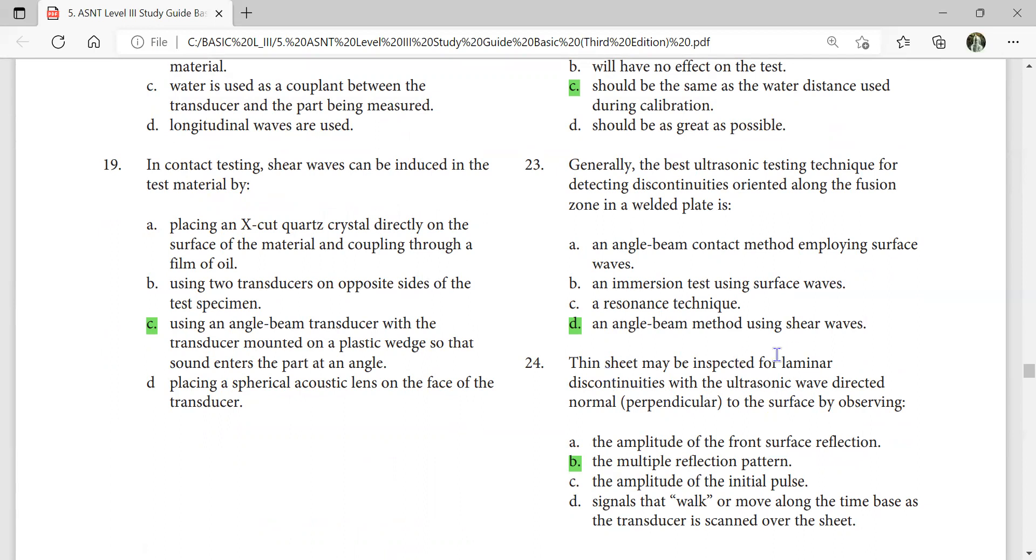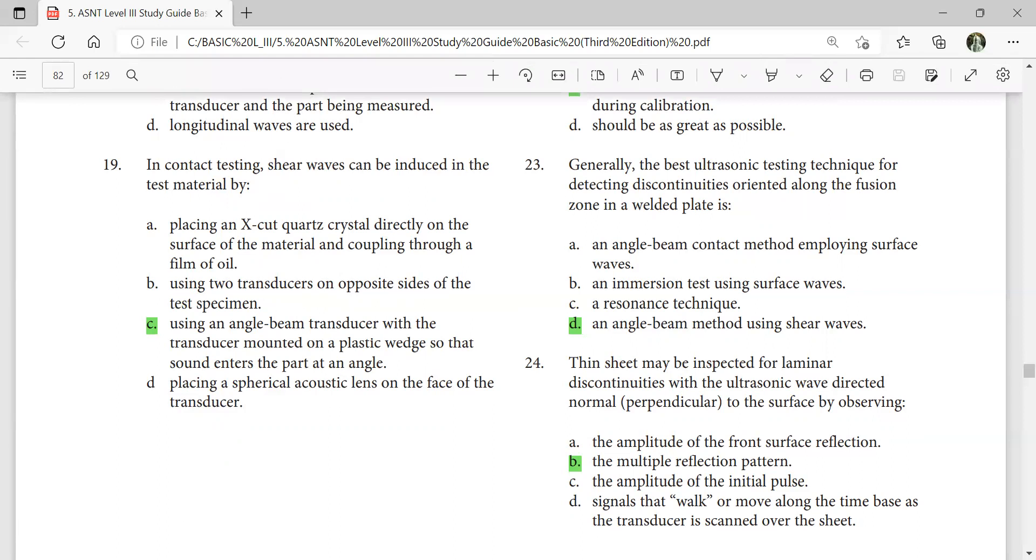Steel may be inspected for laminar discontinuities with ultrasonic waves directed normal to the surface by observing the amplitude reflection pattern, the multiple reflection pattern. Since you have multiple echoes, observe how the multiple reflection pattern is behaving.